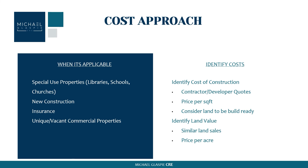Also consider whether it's new construction or an existing property. For new construction, raw land makes sense because developers have to make the lot site-ready through formal paperwork, zoning, and so forth. For an existing building where you're looking at rebuild costs, the land is already developed. This matters because raw land sells cheaper than site-build-ready land. If you're looking at new construction, use raw land comps; if you're looking at site-build-ready land, try to find that type of comparable.